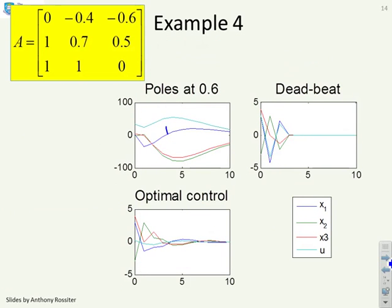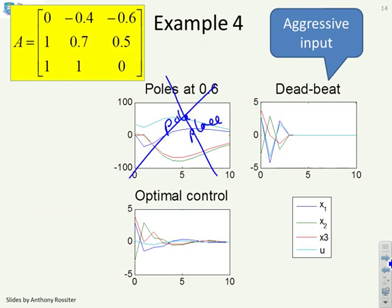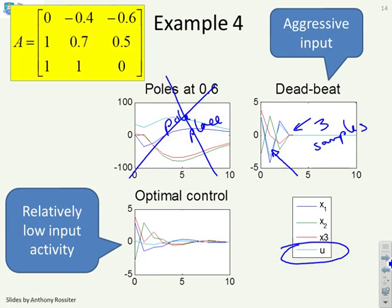What about example four then? You'll see that pole placement has not performed particularly well. But if I look at the deadbeat you'll see it's got a very aggressive input. Here's the input in this light blue curve. It's actually very aggressive but yes I've stopped moving after three samples. I've jumped up and down a lot but I've got to zero in three samples. You compare that to optimal control and you'll see the corresponding input is relatively calm and still my convergence is reasonable. I've got pretty close to the origin after about six samples.